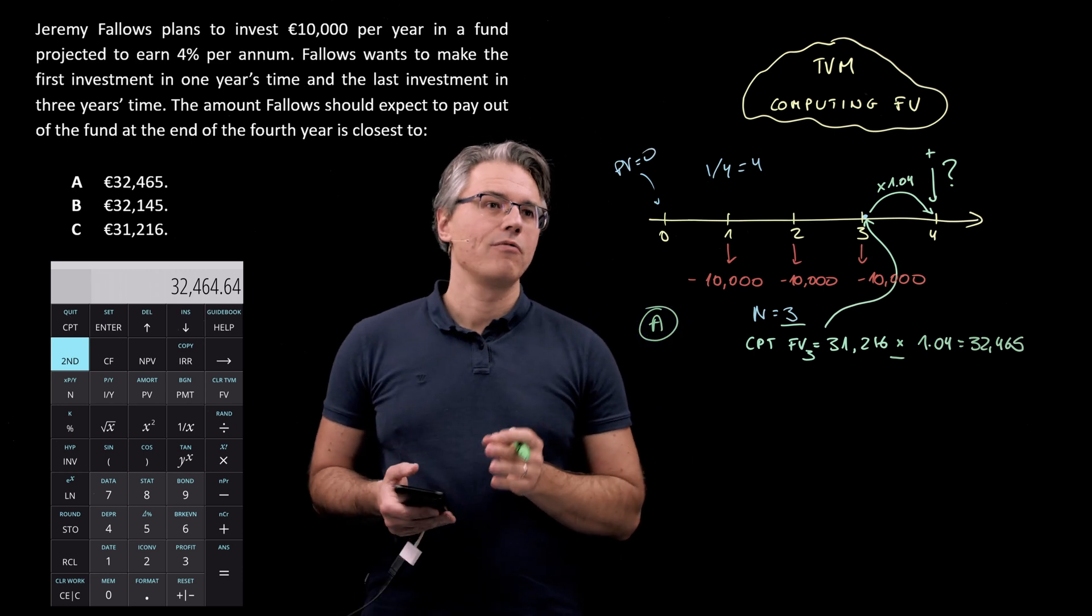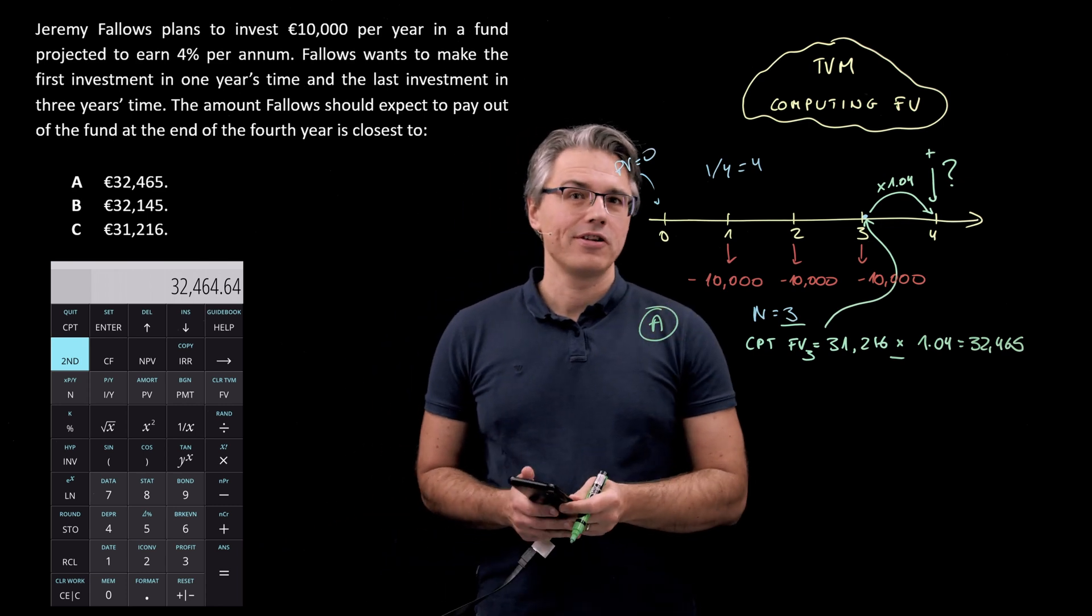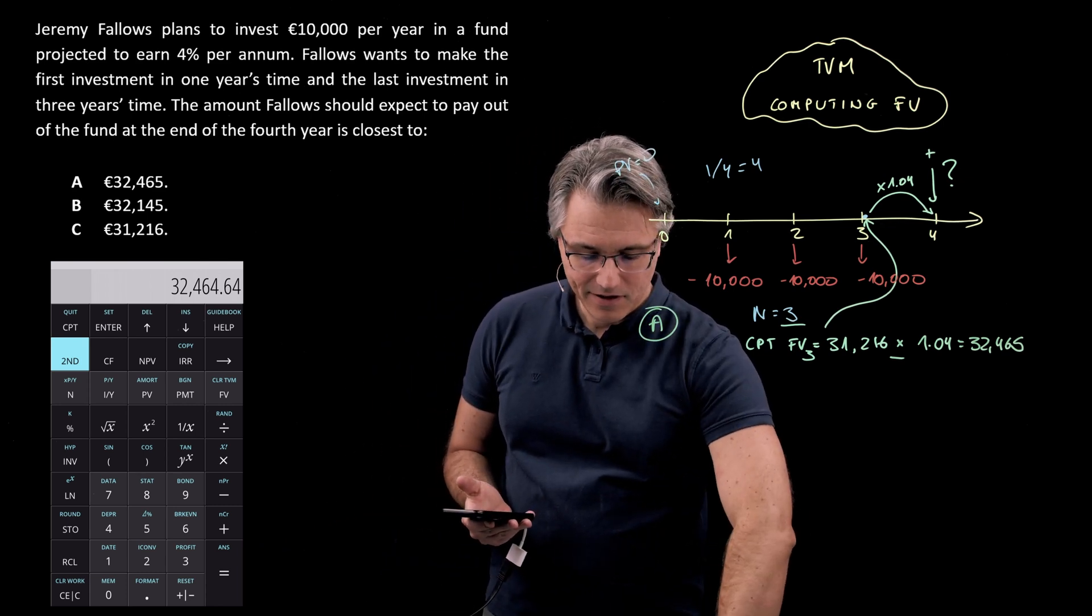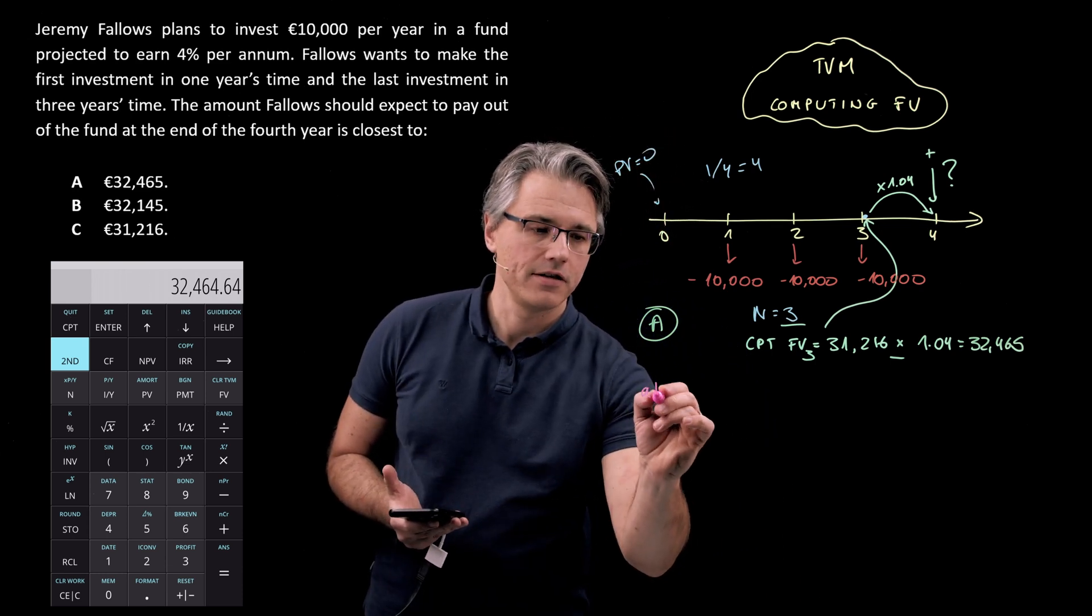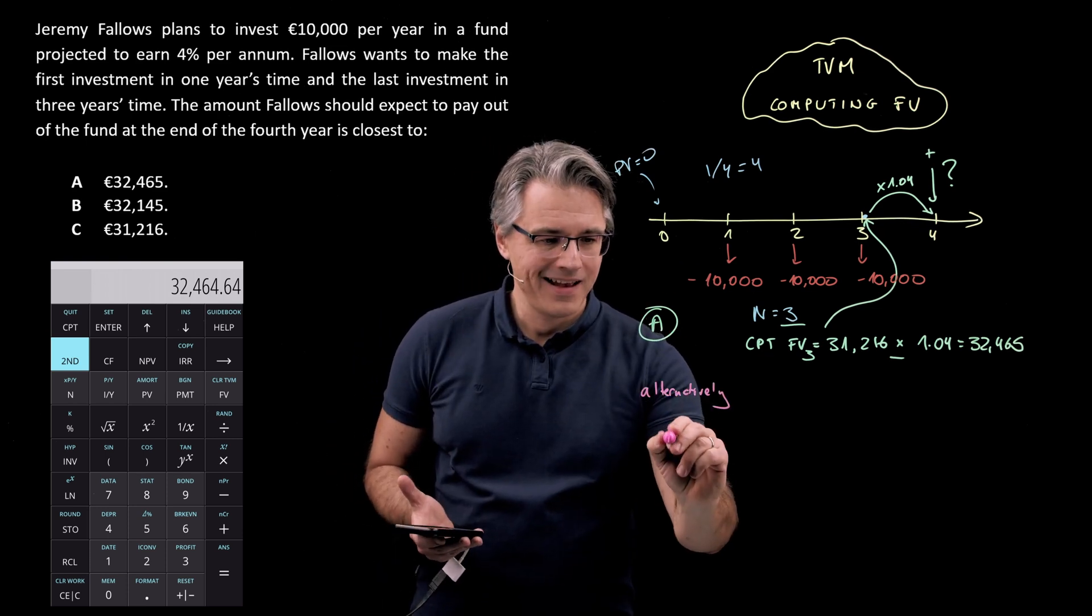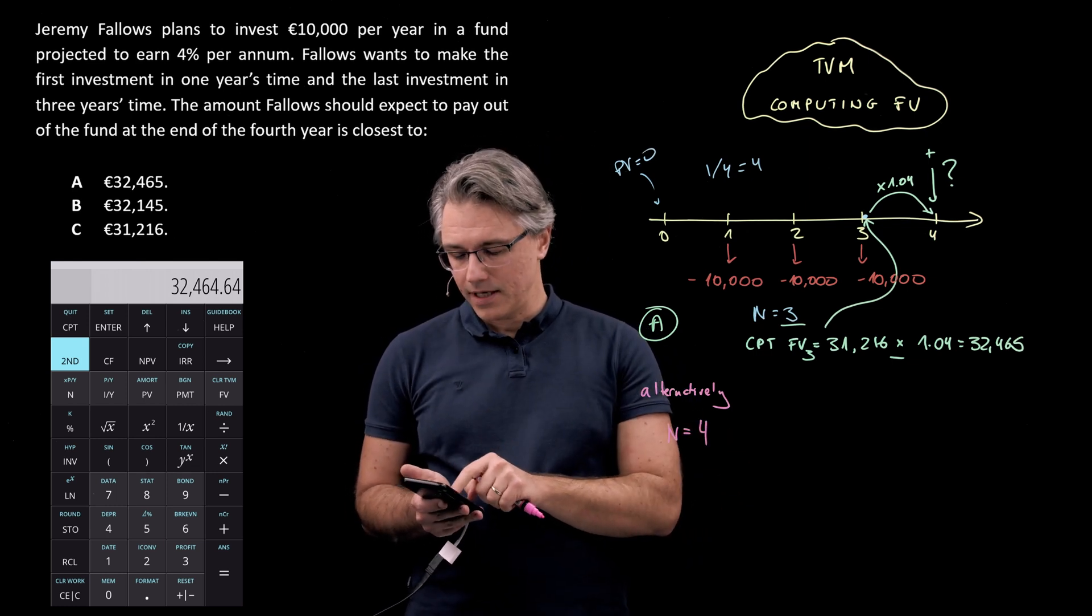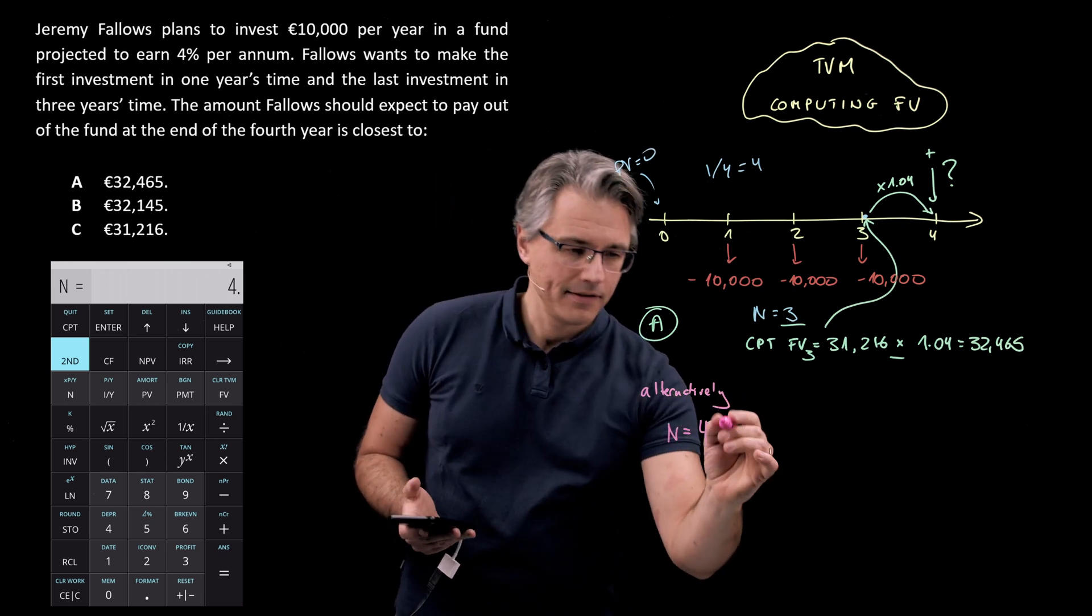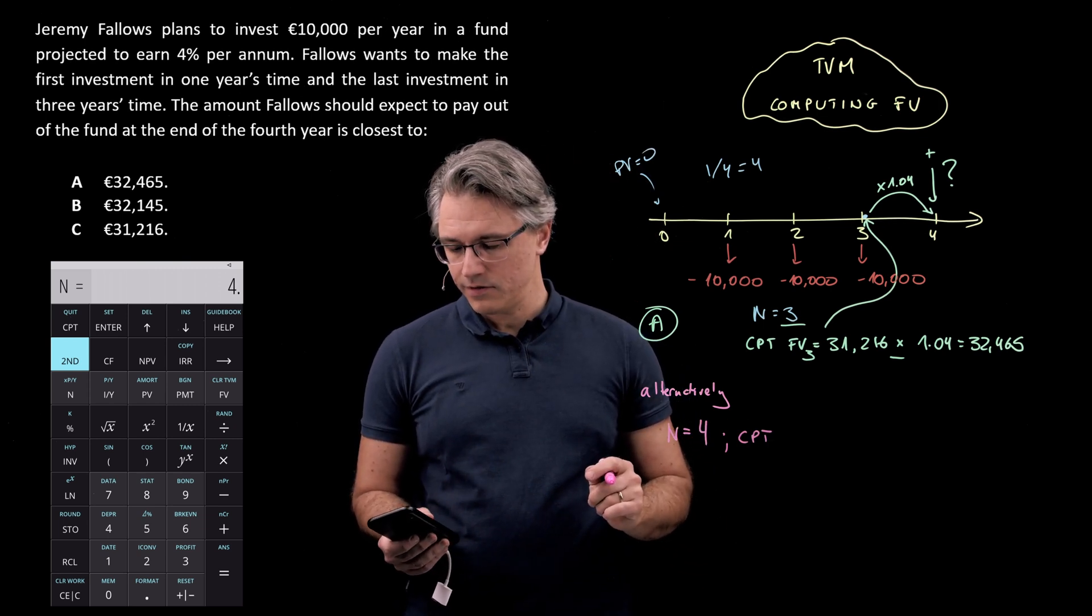However because I do want you to feel really comfortable with your calculator, what I want to show you now is an alternative way of doing this. What I could tell my calculator, so let me write alternatively over here, is that just changing one input n equals to four instead of three, let's see what would happen. Four for n and let's recompute, compute the FV.